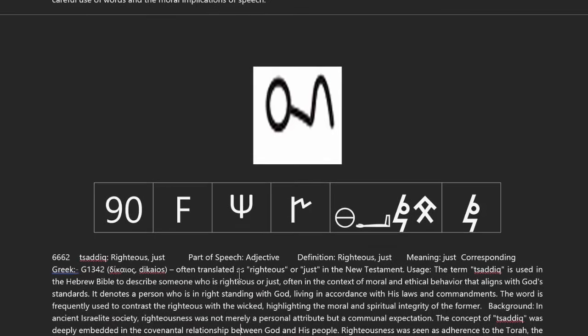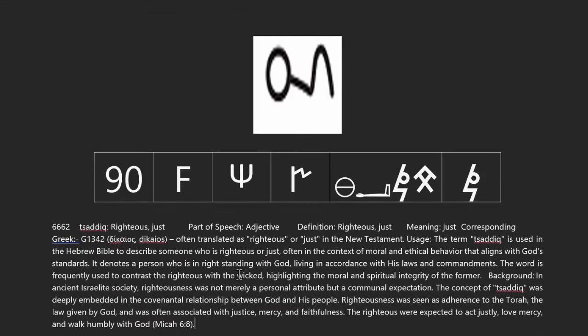This one has the pictograph of a man laying on its side. But when we look at the Bible to find a definition, we find Strong's number 6662, which is Tsadeq. It means righteousness or just — it is actually an adjective, not a noun. A man laying on its side, but it's describing this man and his righteousness. The corresponding Greek also translates to 'righteous or just.' In ancient Hebrew society, righteousness was not merely a personal attribute but a communal expectation. Notice — it ended up as the letter F in the alphabet.